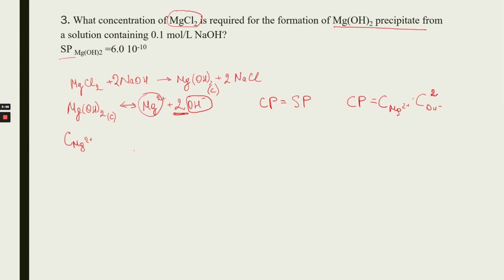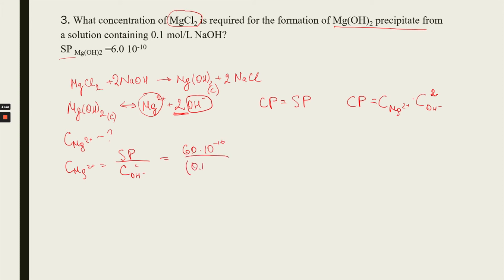The concentration of magnesium can be written using the solubility product divided by the concentration of hydroxide ions squared. Putting in the numbers: 6.0 × 10⁻¹⁰ ÷ (0.1)² = 6.0 × 10⁻⁸. Wait — it gives 6.0 × 10⁻¹⁰ ÷ 0.01 = 6.0 × 10⁻⁸ mol/L.